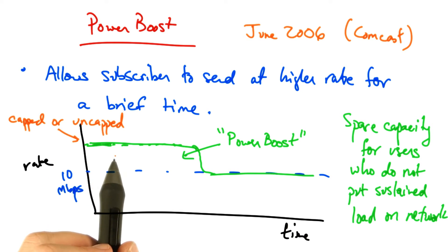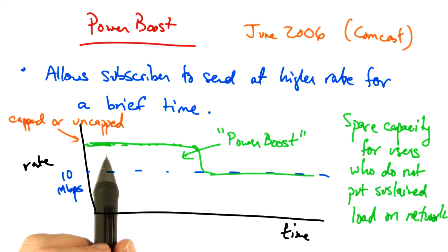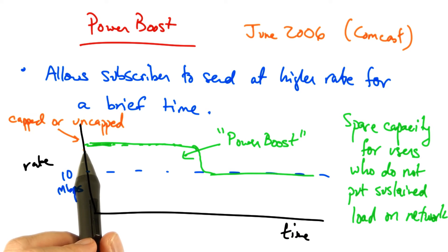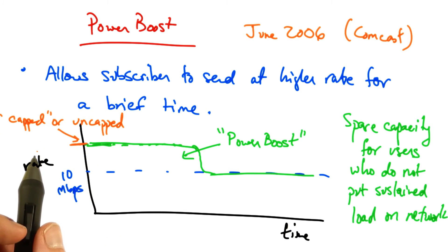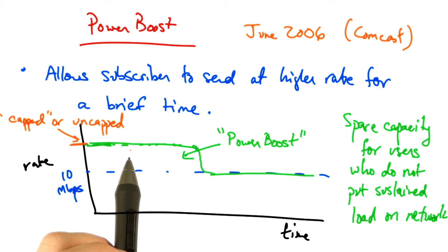There are two types of PowerBoost. If the rate at which the user can achieve during this burst window is set to not exceed a particular rate, then we say that the policy is capped PowerBoost. Otherwise, the policy or the shaping is called uncapped PowerBoost.